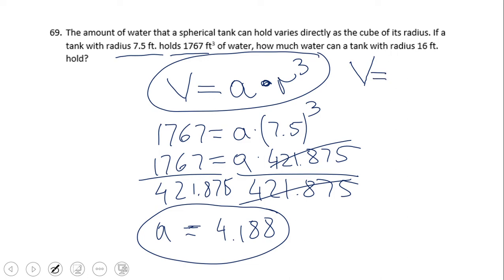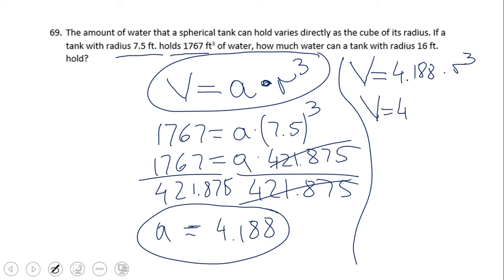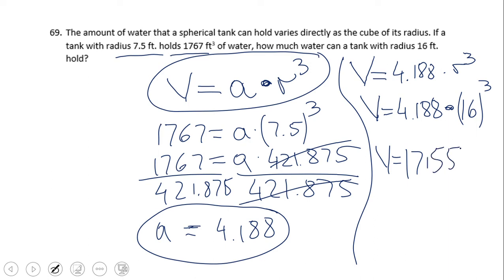Now we plug a back into the formula: Volume equals 4.188 times r cubed. For a tank with radius 16 feet, we compute 4.188 times 16 cubed, giving a volume of approximately 17,155.86 cubic feet. That is the volume of water the tank with a 16-foot radius can hold. Go ahead and try problem 70 on your own.